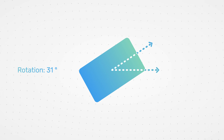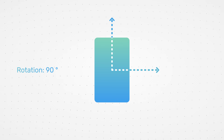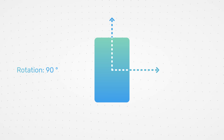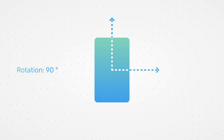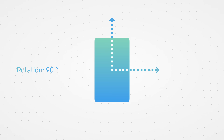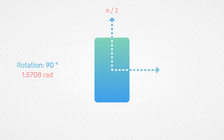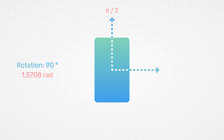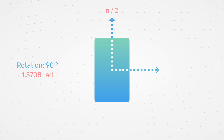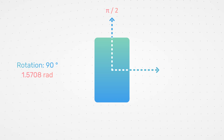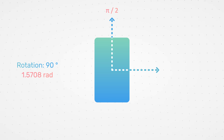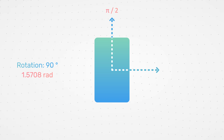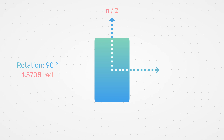Let's rotate an object. We can express its rotation using two units: degrees — here we are rotating the object to 90 degrees — or using radians. In that case, that would be pi divided by 2, which is approximately 1.57 radians. Expressing the rotation in radians doesn't feel much easier, so why would we use radians?